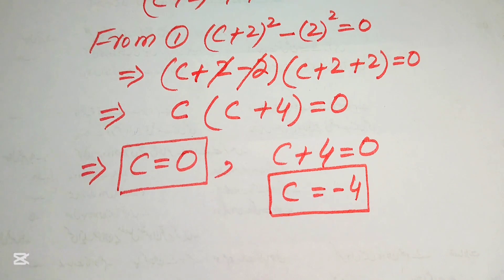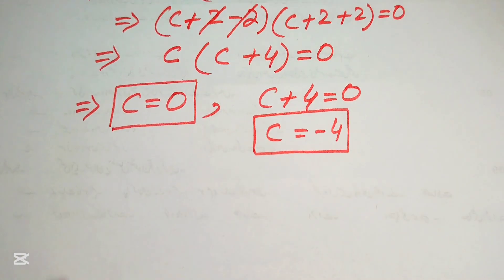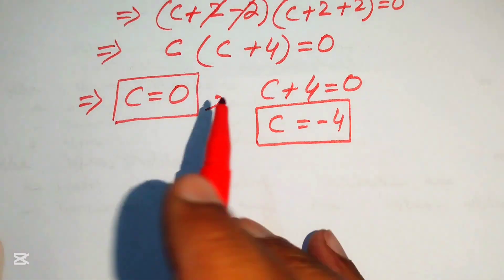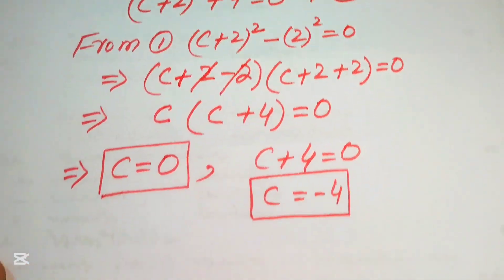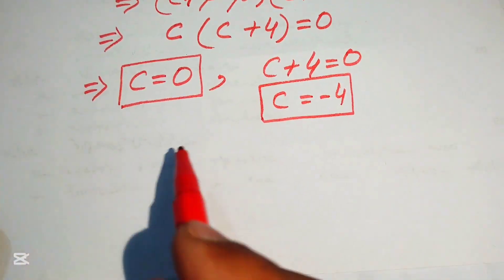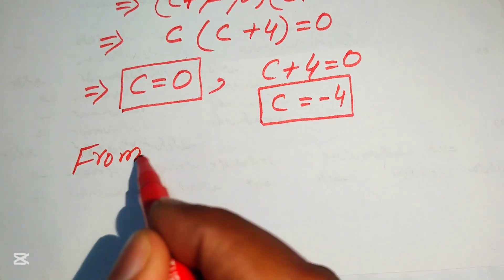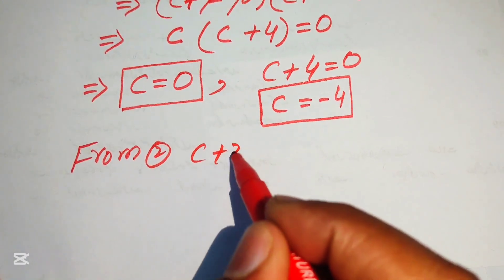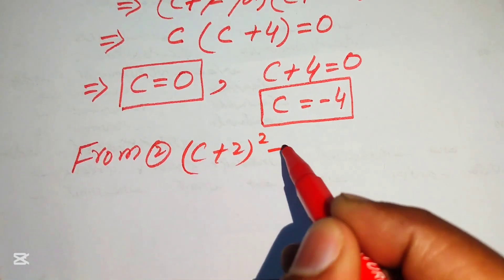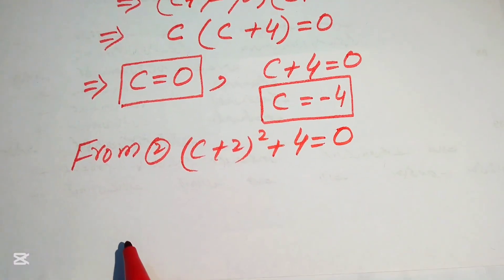We have found two roots from equation 1. To find the remaining two roots, we now focus on equation 2: (C + 2)² + 4 = 0.